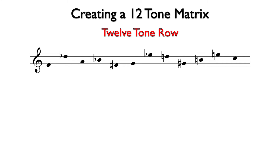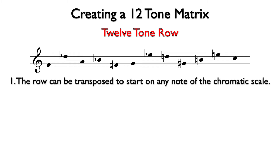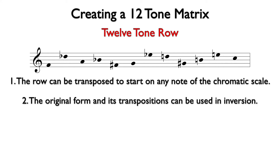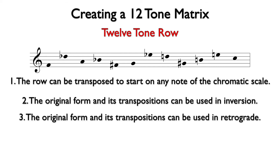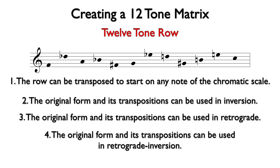Based on Schoenberg's rules, a 12-tone row can be used in various ways within a composition. The row can be transposed to start on any note of the chromatic scale. By taking all of these possible variations of the 12-tone row — there are 48 — a composer has a wealth of note choices to draw from in creating a composition.